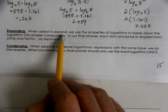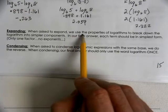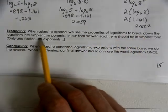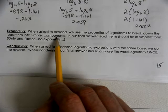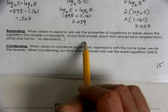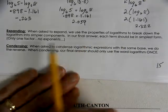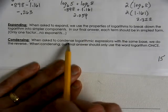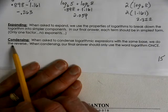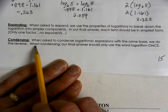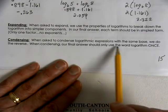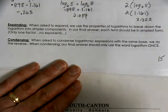When asked to expand, we use the properties of logarithms to break down a logarithm into simpler components. The final answer should have each term in simplest form. When asked to condense logarithm expressions with the same base, we do the reverse — our final answer should use the word 'logarithm' only once.